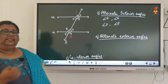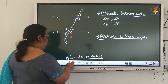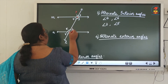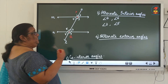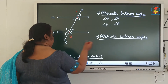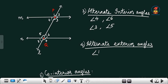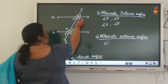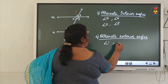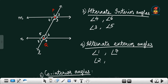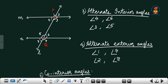If there are interior angles, there will definitely be exterior angles also. Angles 1, 2, 7, and 8 are the exterior angles. For alternate exterior angles, if I take angle 1, the alternate exterior angle will be angle 7. Angle 1 and angle 7, and angle 2 and angle 8 will be the alternate exterior angles.